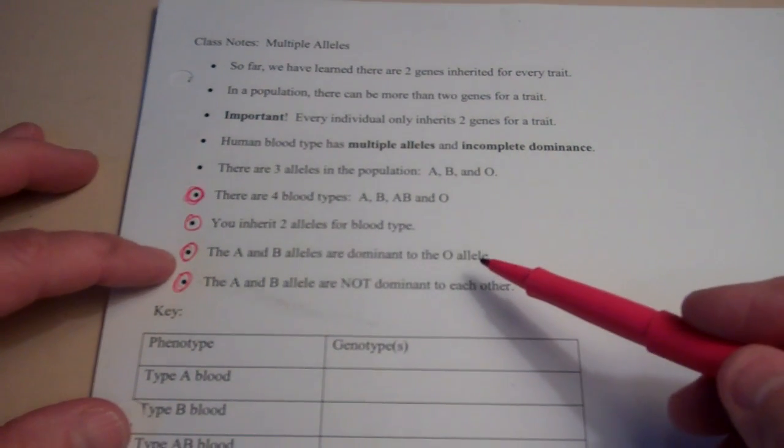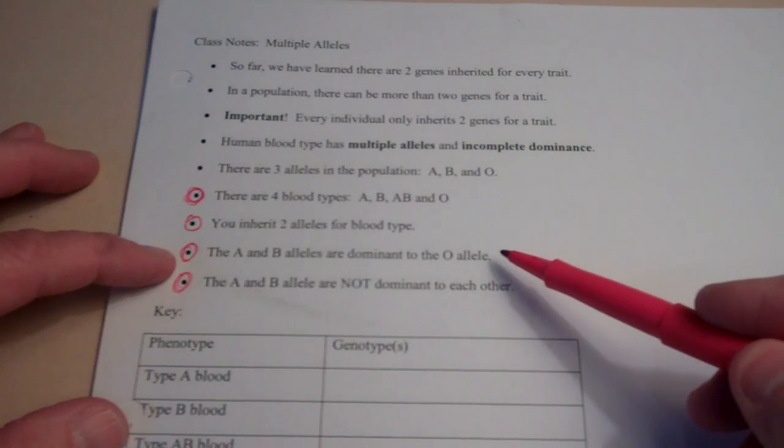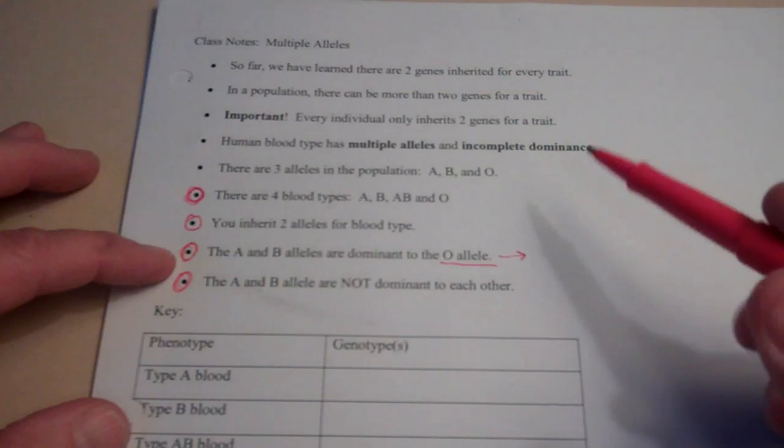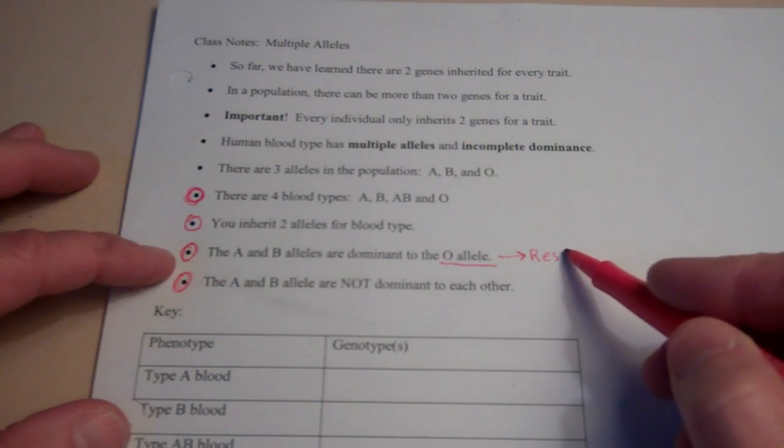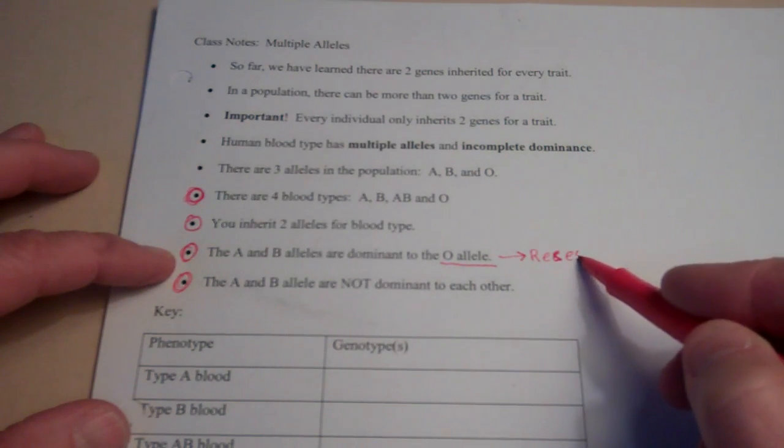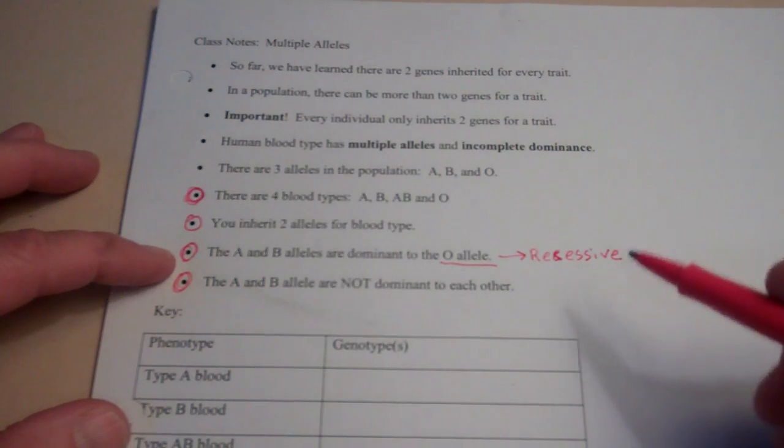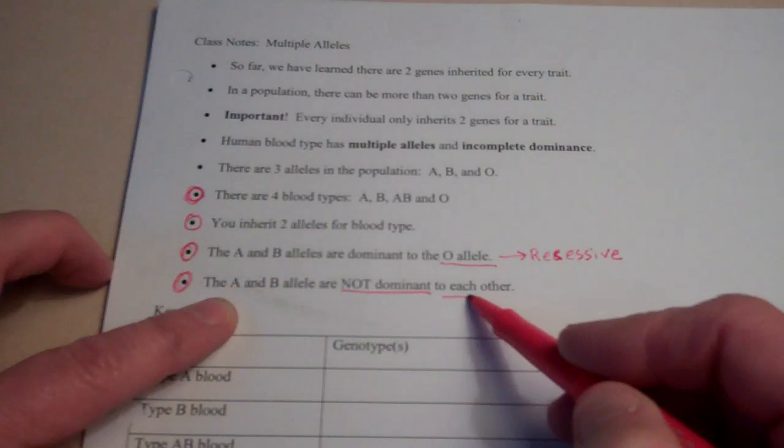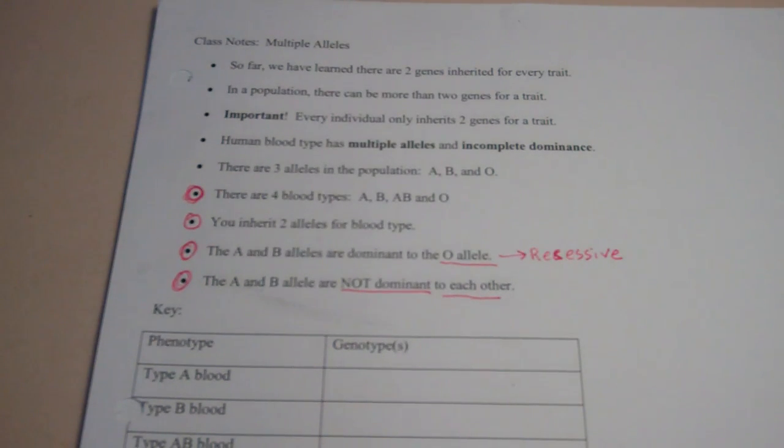Now this is important, the A and B alleles are dominant to the O allele, so that means that the O allele is recessive. And then the A and B alleles are not dominant to each other.